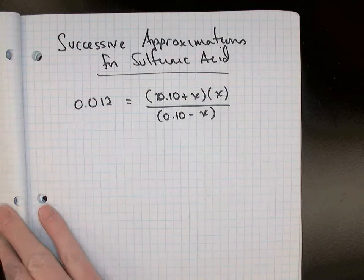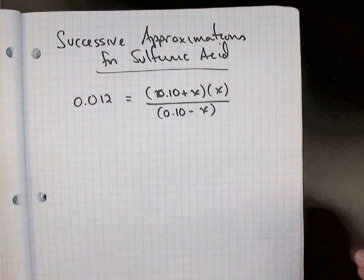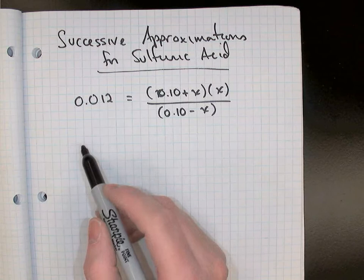All right, this video we're going to take a look at how to do successive approximation technique in step two of a sulfuric acid problem. I realized that I have done that earlier only with the graphing calculator solver, so I thought I'd show you how to do that here separately in a separate video.